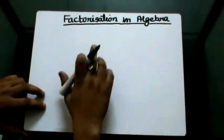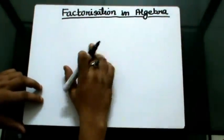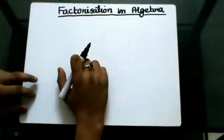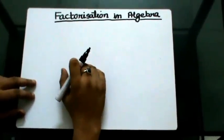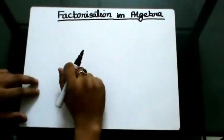In this session we are going to talk about factorization in algebra. Factorization in algebra is actually the inverse process of multiplication. Let's start with an example.